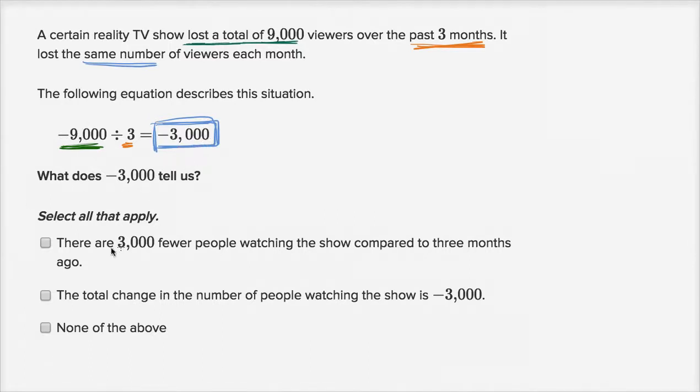Let's see which of these choices match up to that. There are 3,000 fewer people watching the show compared to three months ago. No, they lost 3,000 every month. That's what this is telling us. Every month for three months, the same number each month. They lost 3,000 every month for three months for a total of 9,000, so this isn't right. The total change in the number of people watching the show is negative 3,000. Over a month that would be true, but the total change was negative 9,000. They lost 9,000, and so I would say none of the above. What the negative 3,000 tells us, if there was a choice that said each month they lost 3,000 viewers, that's the choice that I would pick. So I would say none of the above.